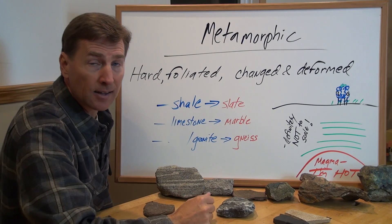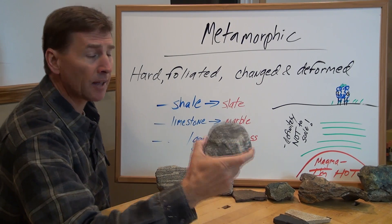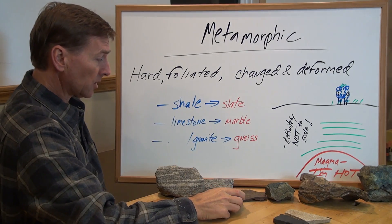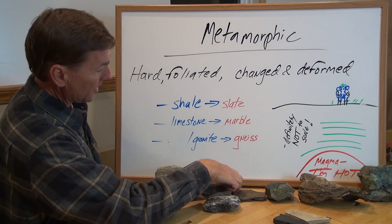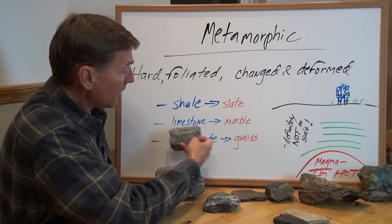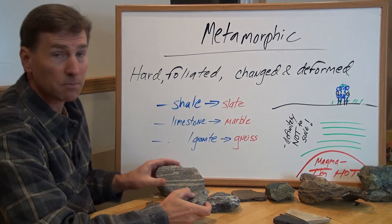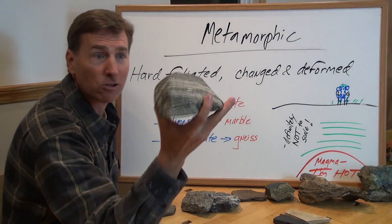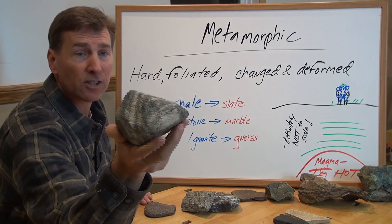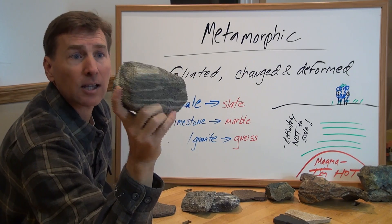Next one is limestone — we looked at that under sedimentary rocks, where it was both organic and a precipitate. If you cook that rock, it's going to look like this — that's a marble. Another metamorphic rock is schist — very common as a metamorphic rock. Or you could have a granite from the Sierra Nevadas that gets cooked, and it would turn into a gneiss — G-N-E-I-S-S. These are fairly rare rocks; you'd find them in Greenland, for example. I found this one near Jackson, Wyoming, near the Grand Tetons.